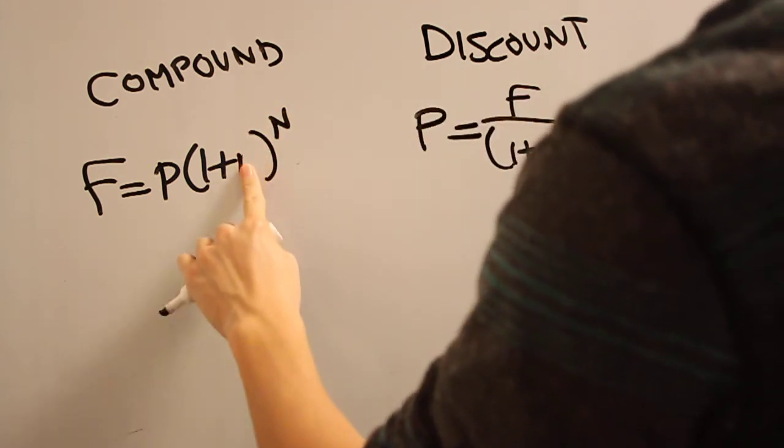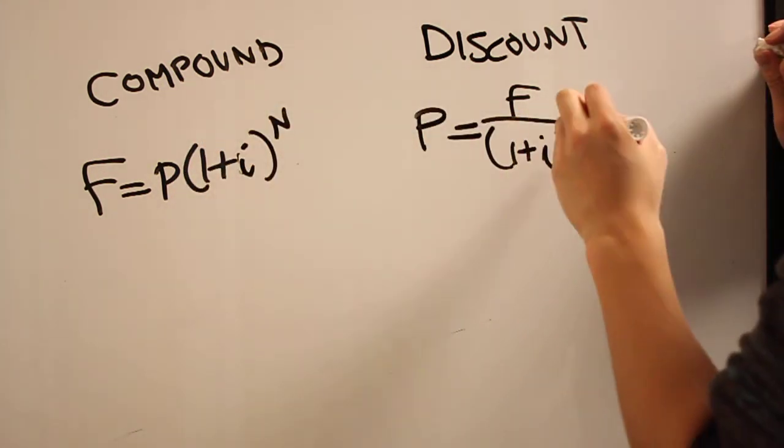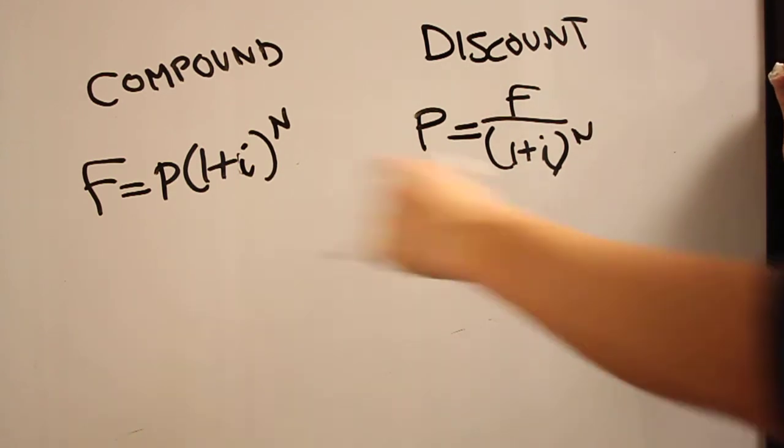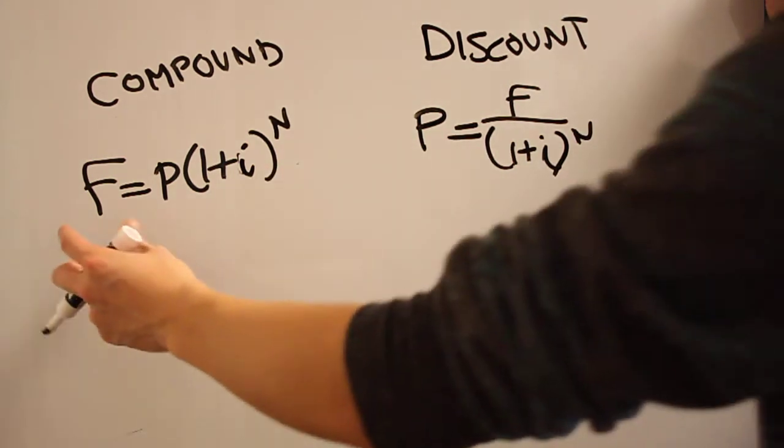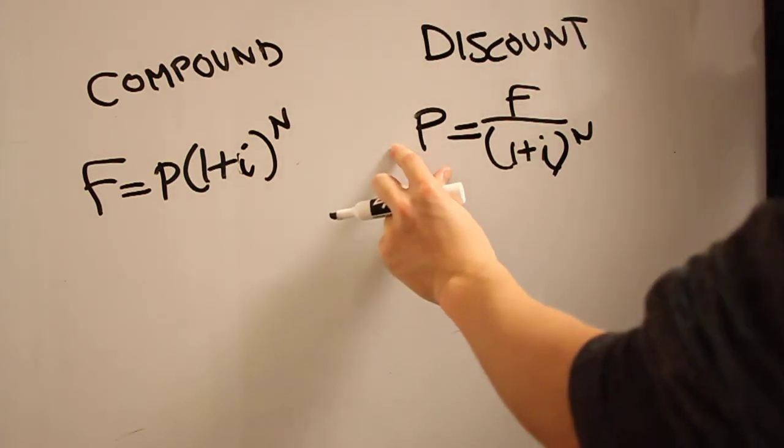Well, if you want to rearrange for P, then you just divide this over to under F. I'm sorry, I wrote this wrong. This is i. Sorry about that. So you see these are the same expression. But here you care about the end result. Here you care about the initial result.